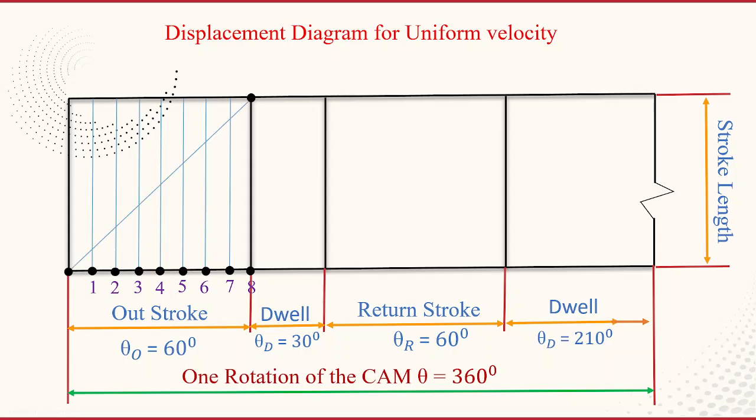So for outstroke, for constructing the displacement diagram, just two corners, the bottom corner and top corner, you can join. Now you can see that the intersection points, these vertical lines and diagonal intersection points, you can mark and name these points A, B, C, D, E, F, G, H, I. So this is the complete points obtained during the outstroke.